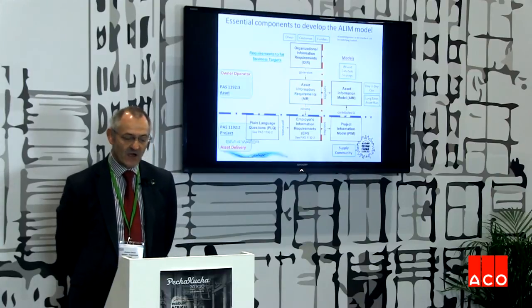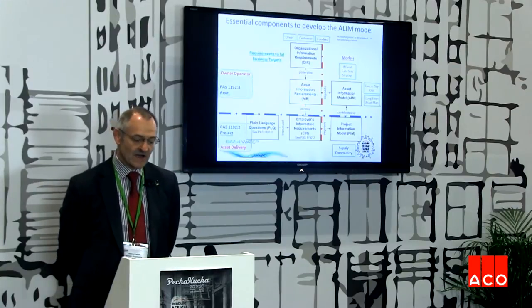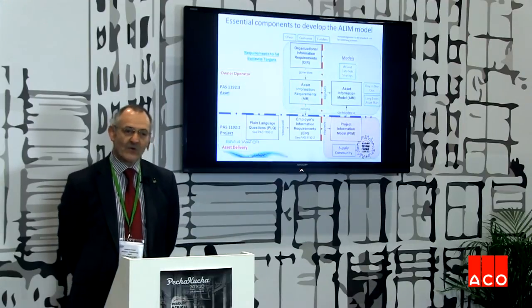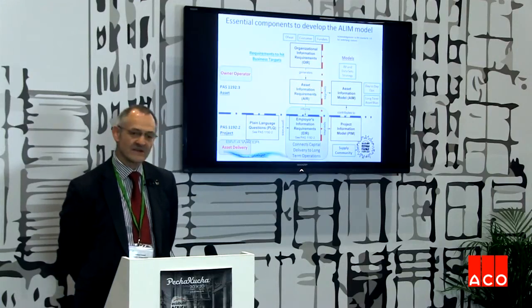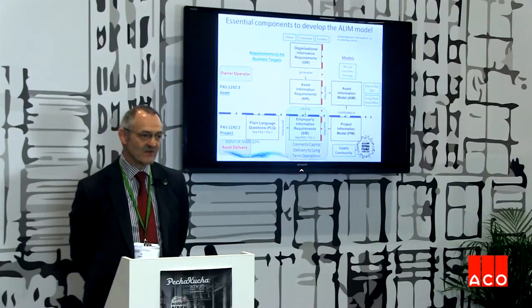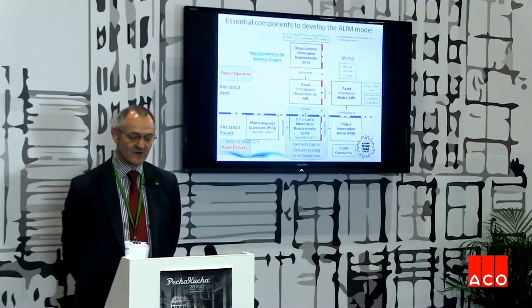The essential components of BIM are captured in this diagram from PAS 1192, which shows the bottom third related to projects and capital delivery, and the top two thirds focused on the owner operator. The owner operator has a big responsibility in setting out the organisational information requirements to drive the asset models. The project information model needs to have information that connects back into that long-term owner operator. So a very important thing we're focusing on is establishing the employer's information requirements, which links those two halves of the diagram.